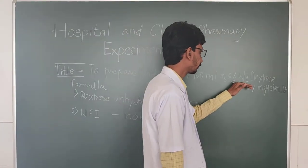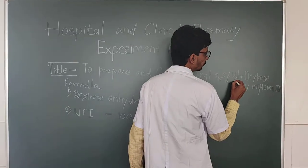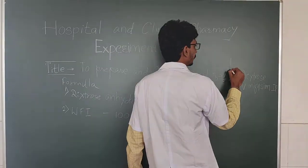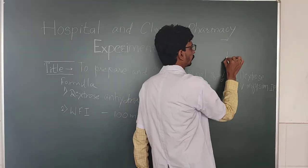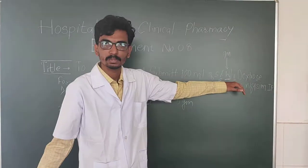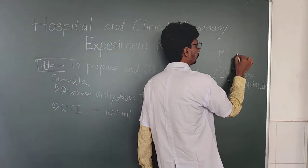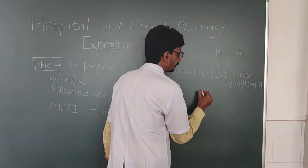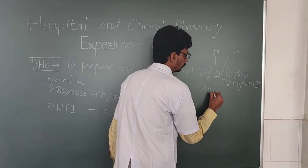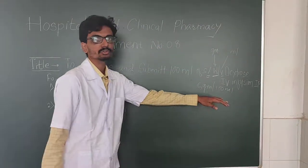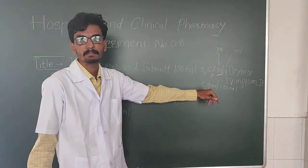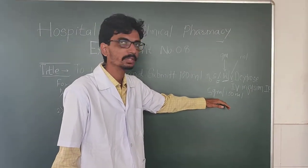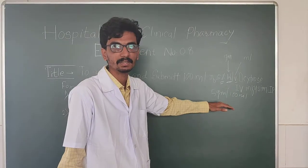In W/V, W means weight and V means volume. So W is in grams and V is in millilitres. For a 5% W/V solution, that means 5 grams in 100 ml. This preparation is made isotonic with body fluid and is prepared intravenously.